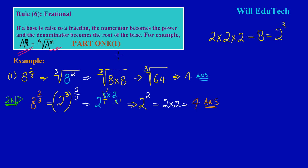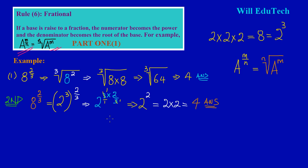This proves that if a base A is raised to a fractional power M over N, it is equal to writing it in surd form, where the denominator becomes the root and the numerator becomes the power. I hope that was useful. Let me work another example to give you the general idea of what's happening.